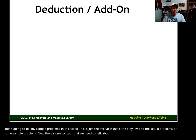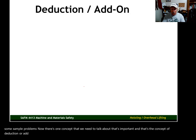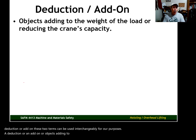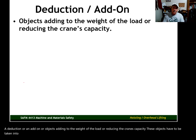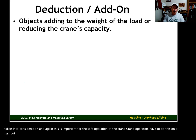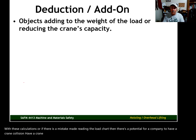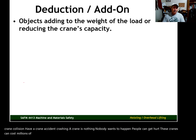One important concept we need to discuss is the concept of deduction or add-on. These two terms can be used interchangeably. A deduction or add-on refers to objects that add to the weight of the load or reduce the crane's capacity. These objects must be taken into consideration for the safe operation of the crane. If a mistake is made with these calculations or reading the load chart, there is potential for a crane accident — cranes can cost millions of dollars and people can get hurt.